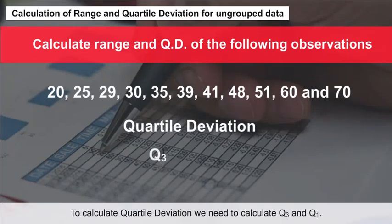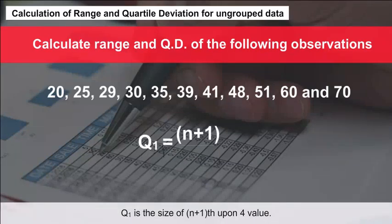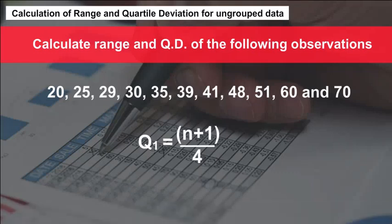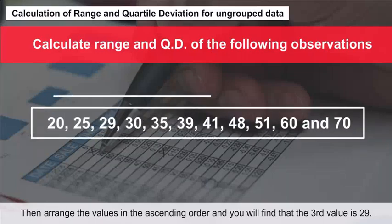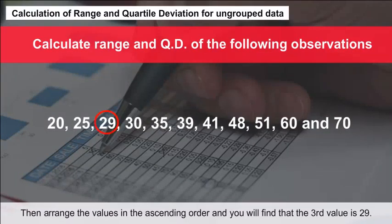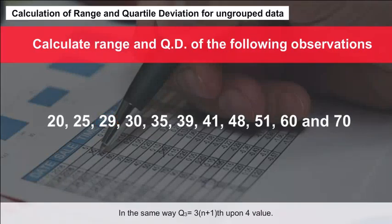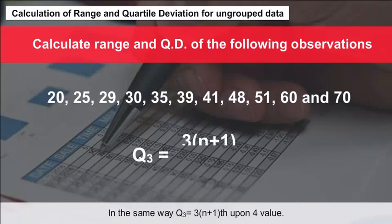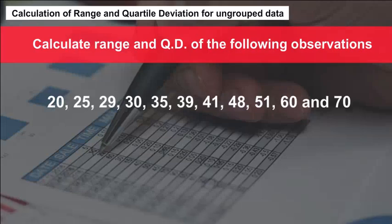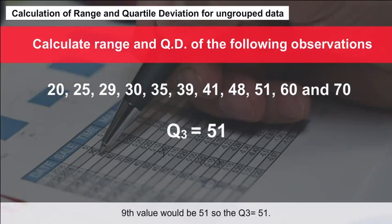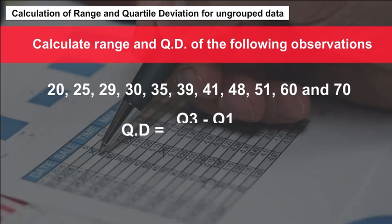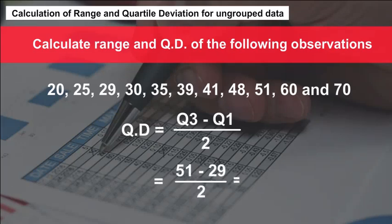To calculate quartile deviation, we need Q3 and Q1. Q1 is the size of the (n+1)/4-th value. Here n = 11, so Q1 is the 3rd value, which is 29. Q3 is the size of the 3(n+1)/4-th value, which is the 9th value, equal to 51. Therefore, QD = (Q3 − Q1) / 2 = (51 − 29) / 2 = 11.